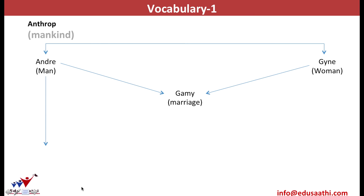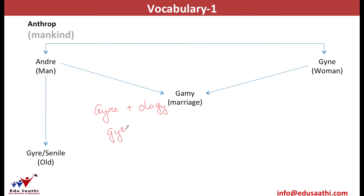Men and women get old, and the word root for old is either 'geri' or 'senile.' The study of old people, the study of the effects of aging, is known as gerontology. Because geri means old and ology is the study, thus gerontology is the study of old people.